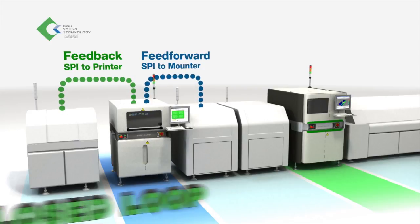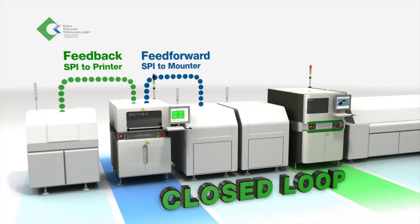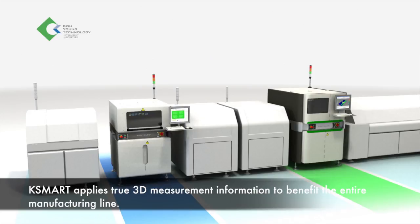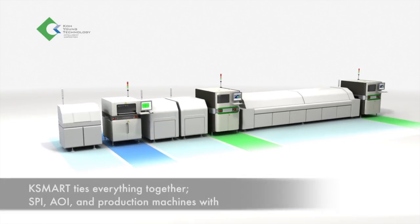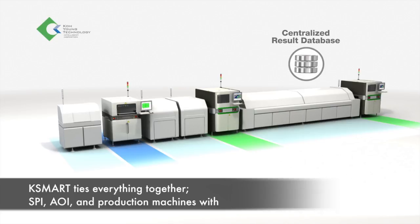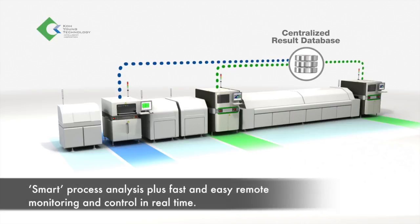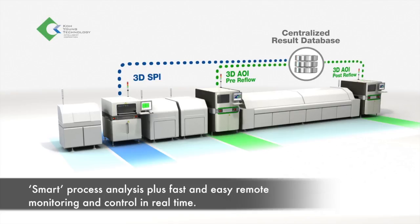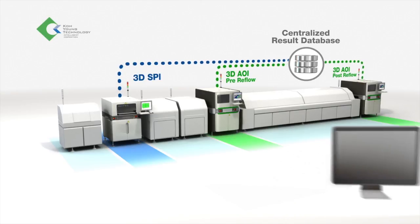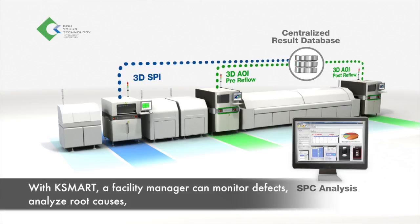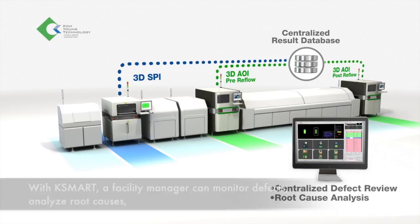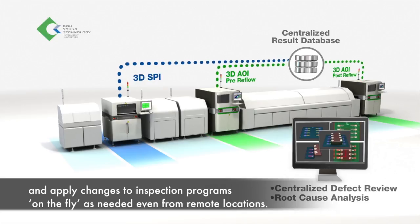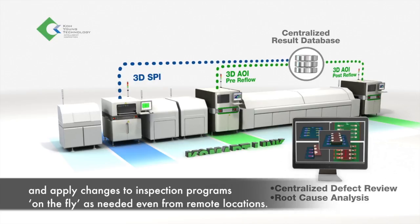KSmart applies true 3D measurement information to benefit the entire manufacturing line. KSmart ties everything together — SPI, AOI and production machines — with smart process analysis plus fast and easy remote monitoring and control in real time. With KSmart, a facility manager can monitor defects, analyze root causes and apply changes to inspection programs on the fly, as needed, even from remote locations.